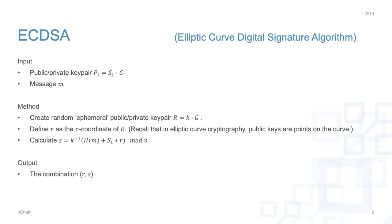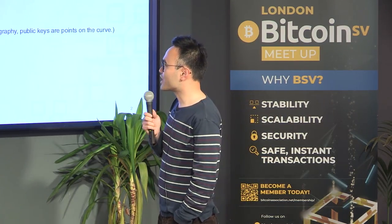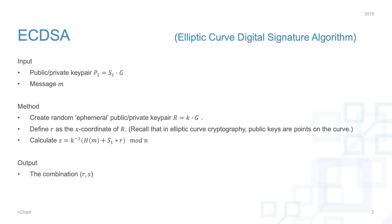First of all, what is ECDSA signature? To briefly describe the algorithms for signing and verification: the input is a key pair — public and private. S1 is the private key and P1 is the public key. P1 is a point on the elliptic curve, and G is the generator. You have a message M to be signed.